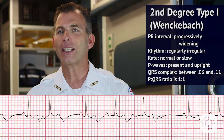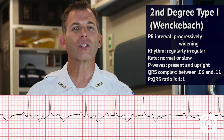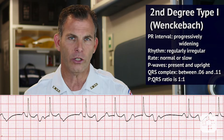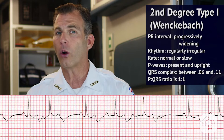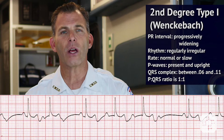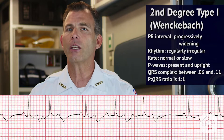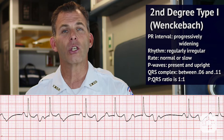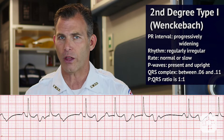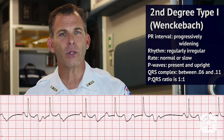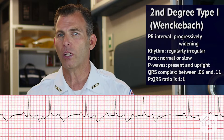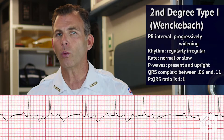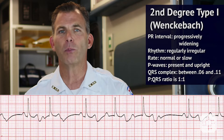In interpreting this ECG, we see that the rhythm with this type of second degree block is regularly irregular. The rate is normal or slow and P waves are present and upright. The P to R interval is progressively lengthening until a QRS complex is dropped altogether. The QRS complex is between .06 and .11 seconds and the P wave to QRS ratio is 1 to 1 until a P wave is blocked.